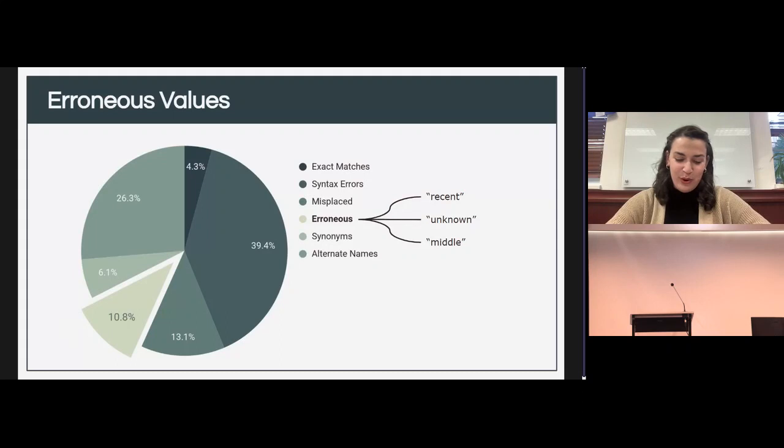Eleven percent of the data were erroneous values of terms that are not values of geologic time. This includes verbatim values such as recent, unknown, or any other term that does not relate specifically to geologic time. These terms are easily identifiable in a data set through automation because they do not match any values in the controlled vocabulary.